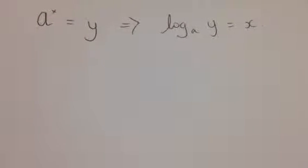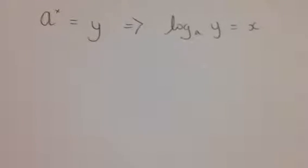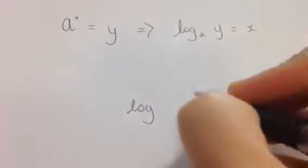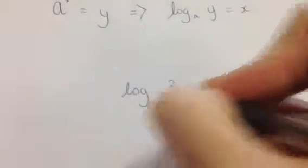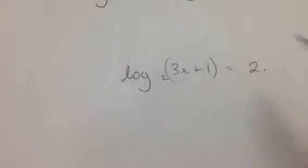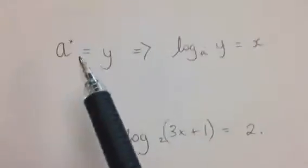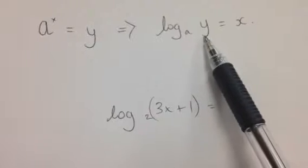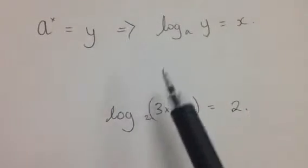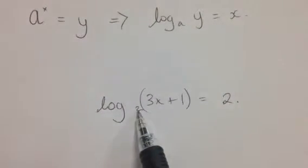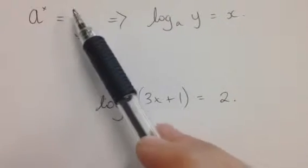I need to be confident going in and out of log format no matter what question they put in front of me. For example, log of 3x plus 1 in base 2 is equal to 2. I need to be able to take this out of log format. In your log tables, in the top right-hand corner, it explains that if I want to come out of logs, instead of y that will be my answer, a is the base number, and this is my missing power.